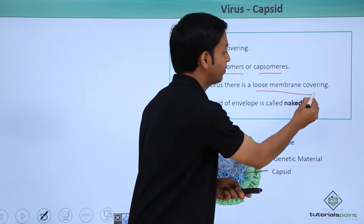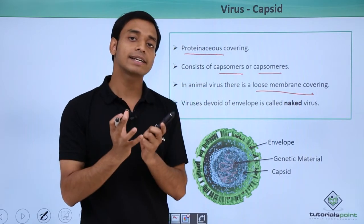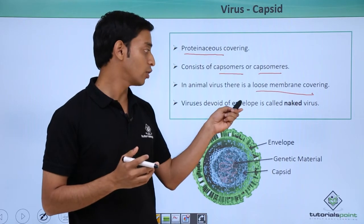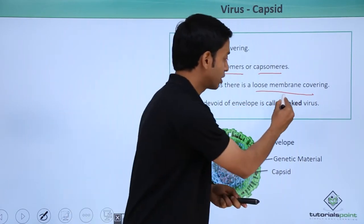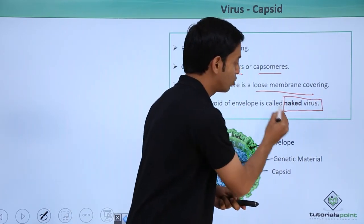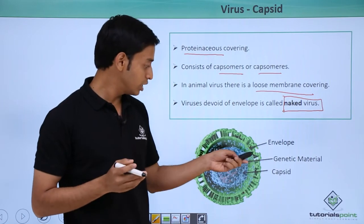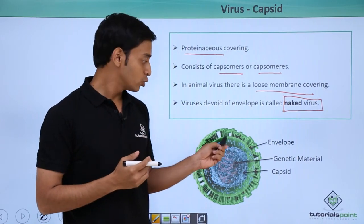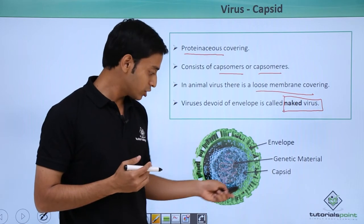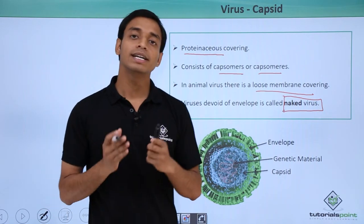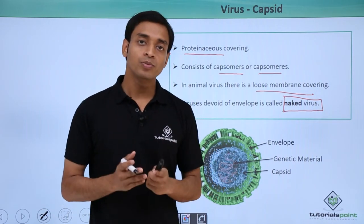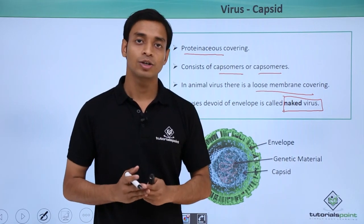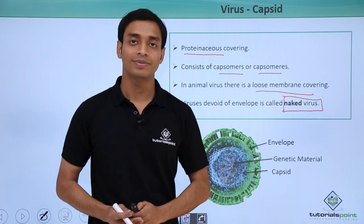In some animal viruses there can be a loose membrane covering acting as an envelope. Viruses which lack this envelope are known as naked viruses. Here you can see an example of an envelope virus — if this envelope is not present, they are called naked viruses. In this video we have discussed the various components of viruses. Thank you.